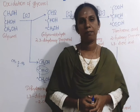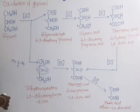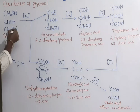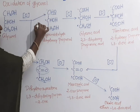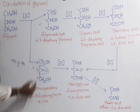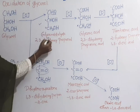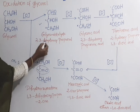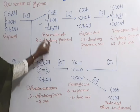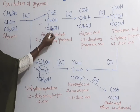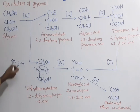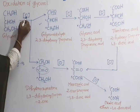In this video we are going to see about the oxidation of glycerol. First, glycerol is oxidized to form two products. The first product is glyceraldehyde (2,3-dihydroxypropanol). The formula for glyceraldehyde is CHO-CHOH-CH2OH. This is the formula for glycerol.